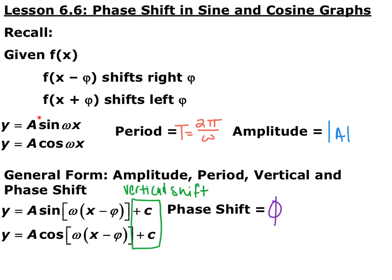The letter A out in front is going to vertically stretch or compress sine and cosine depending on if it's bigger than 1 or less than 1. The absolute value of that number is what we call the amplitude — that's the distance from the x-axis or the equilibrium point to the highest or lowest point of the graph. The period, how long it takes to complete one cycle of the function, is 2π divided by omega.